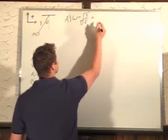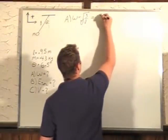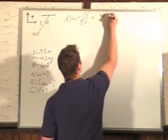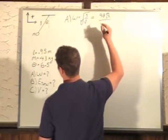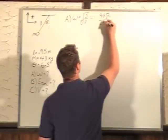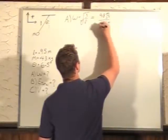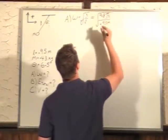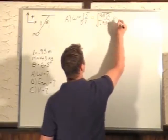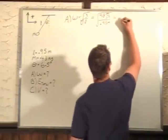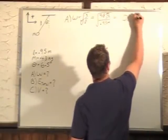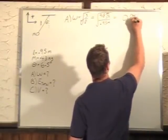g is just 9.8 meters per second squared, length of our pendulum is 0.95 meters. That gives us an answer of, after rounding to our two significant digits, 10 radians per second.